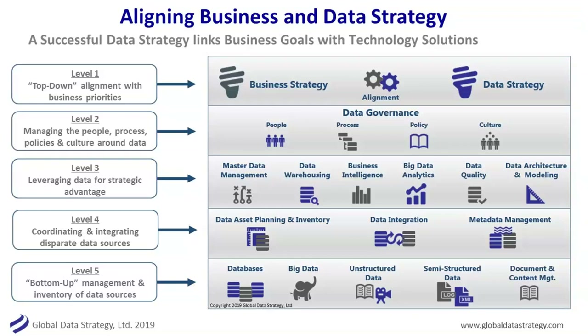Starting from the top, level one of the framework is: why are we doing this — what's the top-down business strategy? At level five, we look at the data estate: what data do we have? Is everything in a relational database, or should we be looking at other sources — social media data, video streaming, voice-to-text analytics? Or maybe everything is in a spreadsheet and we need to get it into a more structured format. Taking a realistic view of what you have, what you should get rid of, and what you should add is always a big part of a data strategy.